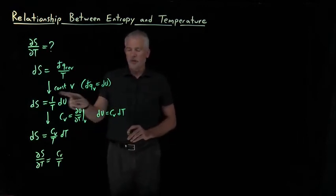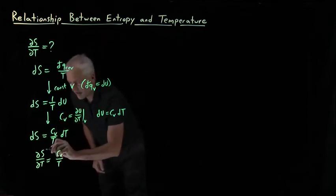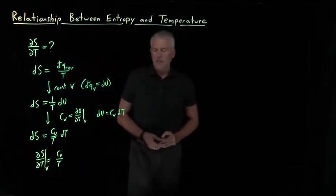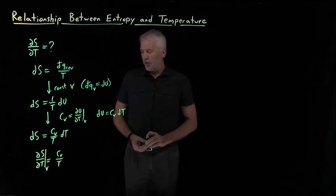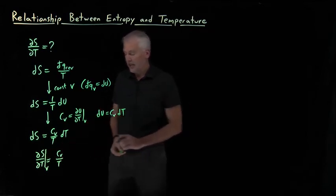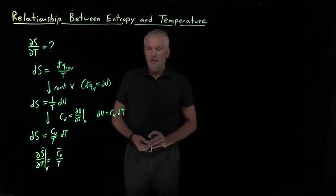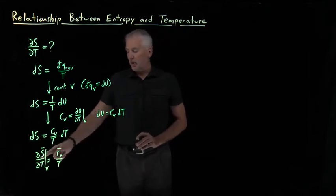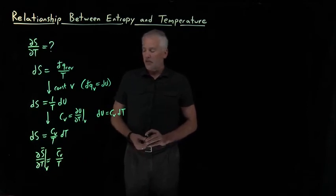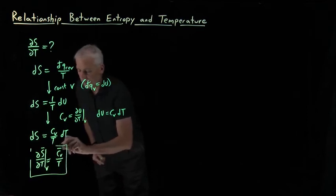And in particular, since we've done all this at constant volume, both this ds and this dt are happening at constant volume, so this derivative that we're taking is ds dt at constant volume. So that expression, and actually the form in which we'll usually use that, is not the extensive version of this expression with the entropy and the heat capacity. But if I stick a bar over both of these, those are now intensive quantities. The change in the molar entropy with temperature is the molar constant volume heat capacity divided by the temperature. So that's an expression we'll use fairly often, so I'll put that in a box.